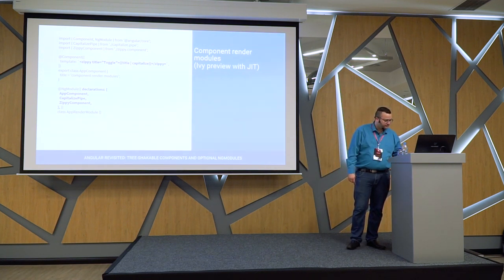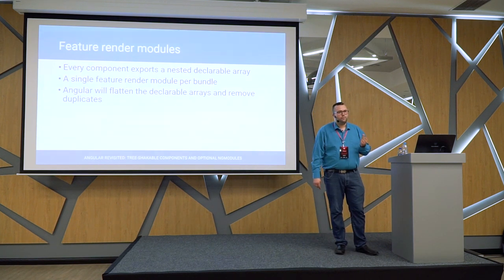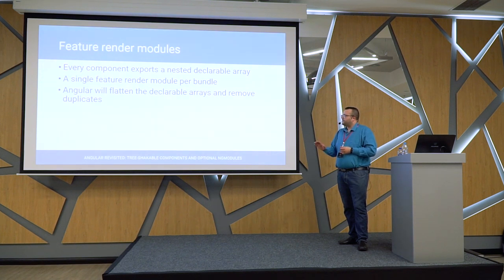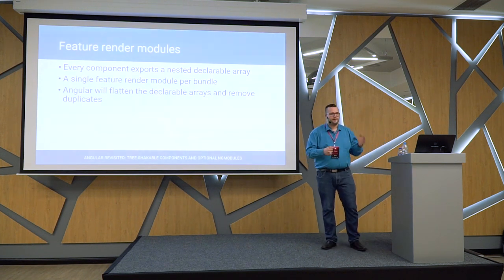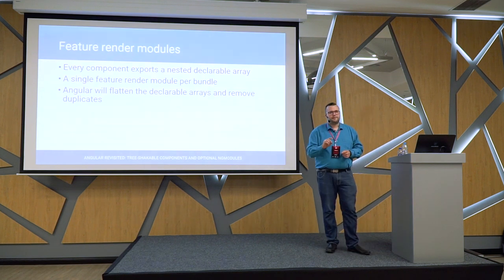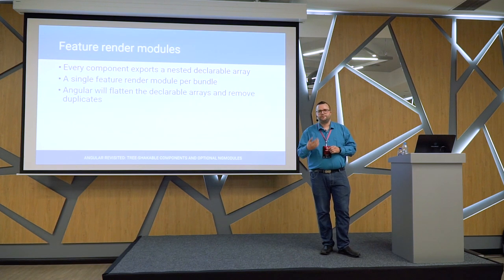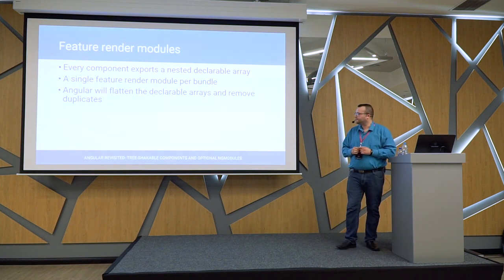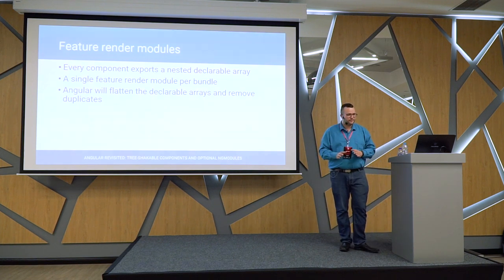I'd like to have ahead-of-time compilation. So instead, we can use what I call feature render modules. Using this technique, there will be one module per bundle — one for the main bundle and one for each lazy-loaded feature. So instead of having a module per component, there will just be a simple array listing the component itself and its declarable dependencies. All of that will propagate up through the components until finally it gets to the top-level feature render module, which will declare all the components, pipes, and directives used in that feature. You would expect there would be duplicates, but Angular will take care of that — so we end up declaring everything in a single module to get rid of Angular modules as much as we can.